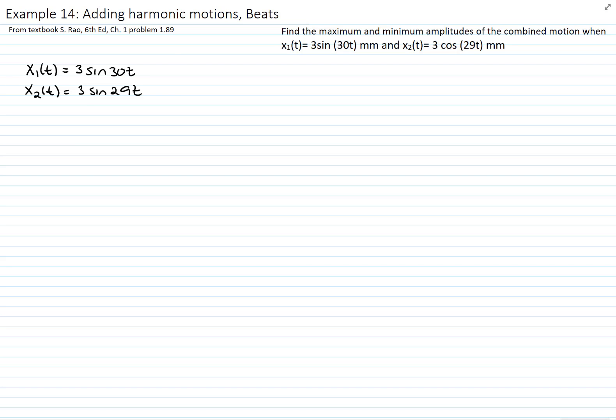One is 29 and the other one is 30. That means that we have only one radian per second different between the two frequencies. So we will add 3 sin(30t) plus 3 sin(29t).